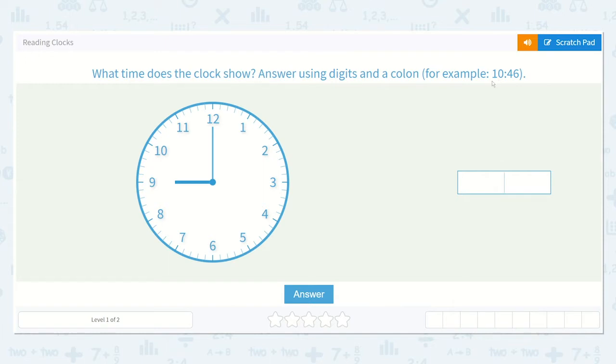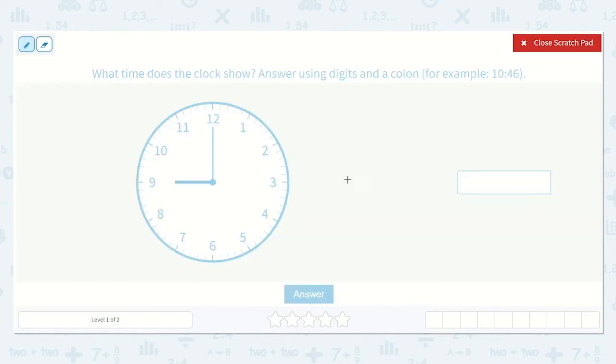The colon separates our hours, like here the hour is 10, and the minutes. The minutes here are 46. Let's look at our clock. I know that the short hand is the hour hand, and I know that the long hand is the minute hand.